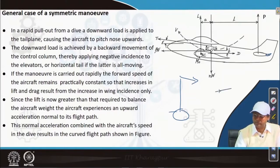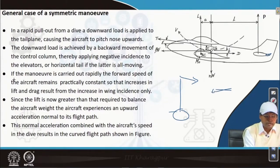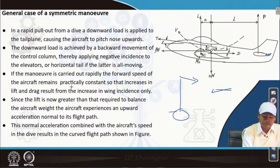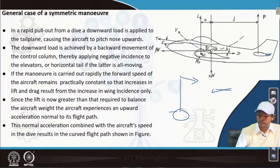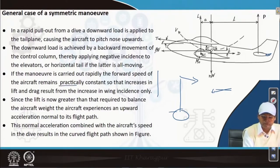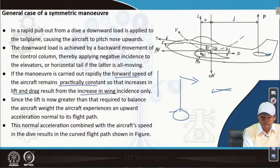The tail plane moves like this — in the normal case it is level, but for a pitching-up movement it rotates this way. If the manoeuvre is carried out rapidly, the forward speed of the aircraft remains practically constant. The increase in lift and drag results from the increase in wing incidence only. We assume the forward speed is practically constant and that the lift and drag result from the increase in wing incidence only.